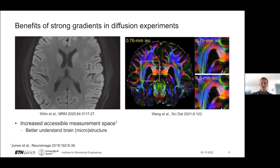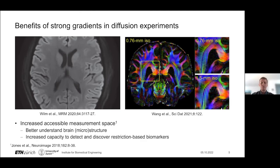This increased measurement space allows us to better understand brain structure and microstructure. On one hand, we can perform tractographies based on more sensitive diffusion tensor measurements, or derive microstructural properties from diffusion encoding methods which are intrinsically inefficient and infeasible without strong gradients. More importantly, this increased space allows an increased capacity to detect and discover biomarkers based on diffusion restrictions. Overall, there is quite some promise in using strong gradients in diffusion experiments, which explains the considerable effort in recent years exploring these possibilities.